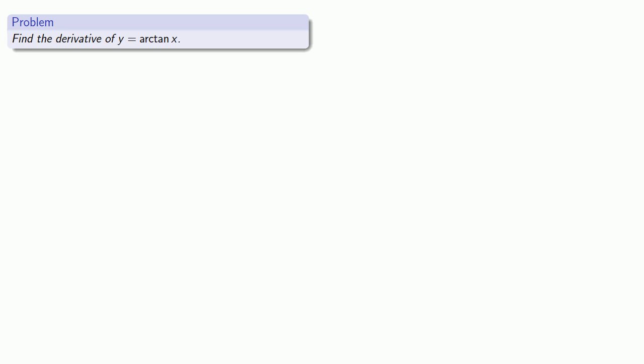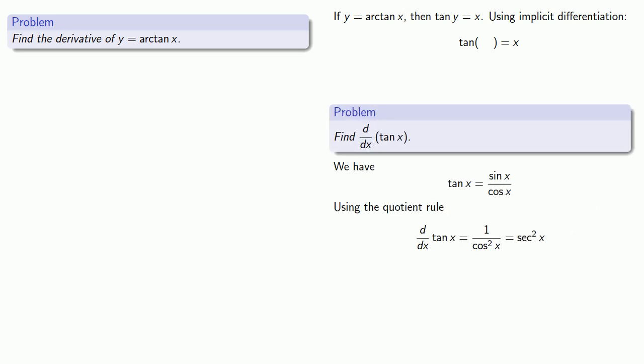How about the inverse trigonometric functions? So say I want to find the derivative of y equals arctangent of x. The key idea here is that the definition of arctangent is that if y equals arctangent of x, then tangent of y is equal to x. So let's use implicit differentiation. On the left-hand side, I have tangent something, and the derivative of tangent is secant squared times the derivative of something. Putting everything back where we found it gives me the left-hand side.